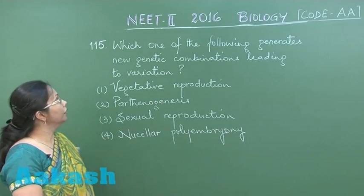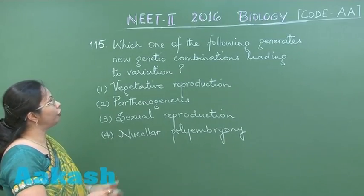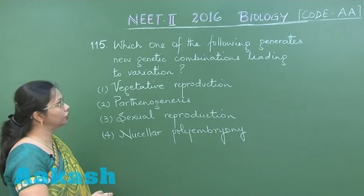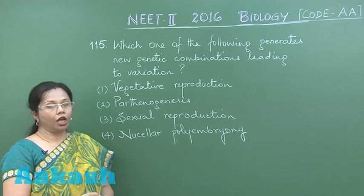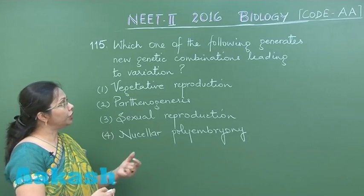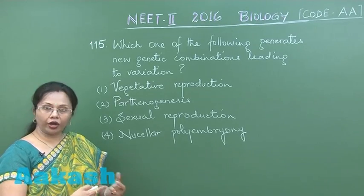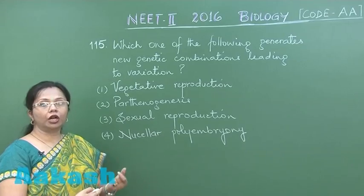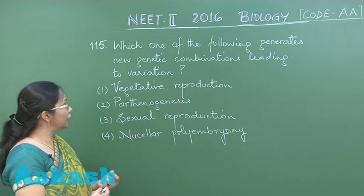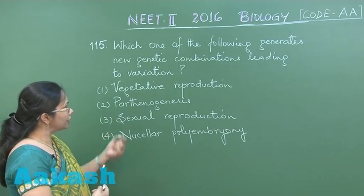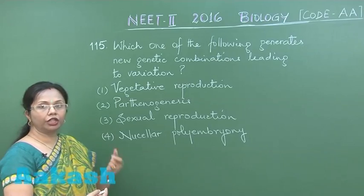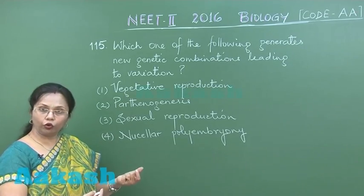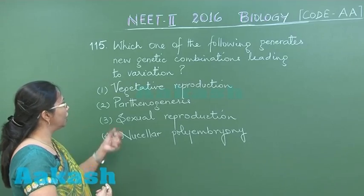In this question: which of the following generates new genetic combinations leading to variation? New genetic combinations can arise during the process of crossing over, which occurs during meiosis. Vegetative reproduction is a method of asexual reproduction where there won't be any meiosis taking place.